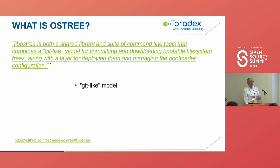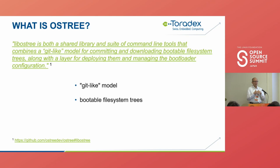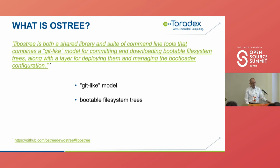Where OSTree differs from Git is that OSTree is really meant to manage bootable file system trees. Git manages just an arbitrary collection of files, whereas OSTree is designed around bootable file system trees. One result of that is you don't really have the concept of branching and merging in OSTree. You might do that at the source code level that generates the OSTree, but for actual managing of bootable file system trees on the device, it's pretty much a straight linear history.